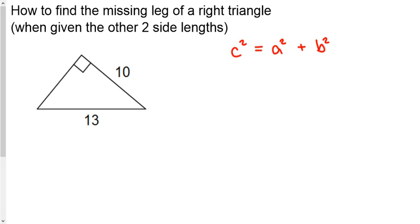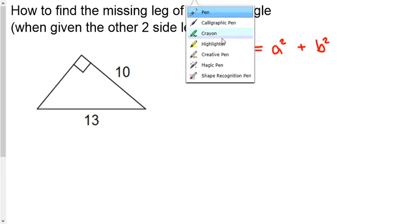How do we find the missing leg of a right triangle? Well, when you're given two of the sides, it's pretty easy to just plug them in and solve for the remaining side that you need.